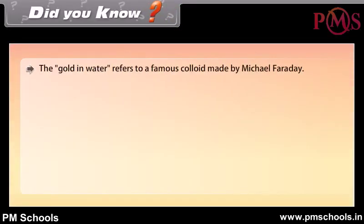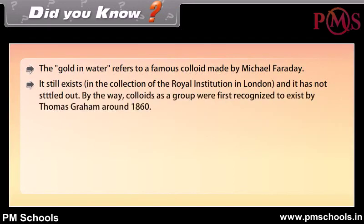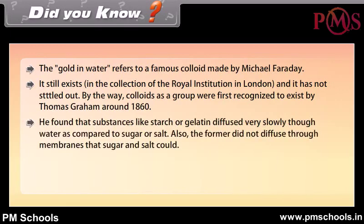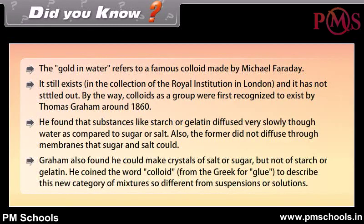Did you know? The 'gold in water' refers to a famous colloid made by Michael Faraday. It still exists in the collection of the Royal Institution in London and has not settled out. Colloids as a group were first recognized by Thomas Graham around 1860. He found that substances like starch or gelatin diffused very slowly in water compared to sugar or salt, and did not diffuse through membranes that sugar and salt could. Graham also found he could make crystals of salt or sugar but not of starch or gelatin. He coined the word 'colloid' from the Greek for glue to describe this new category of mixtures, so different from suspensions or solutions.